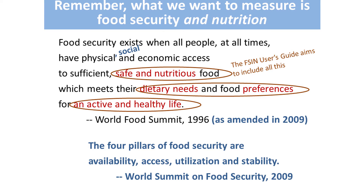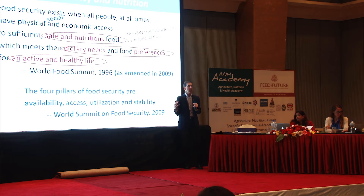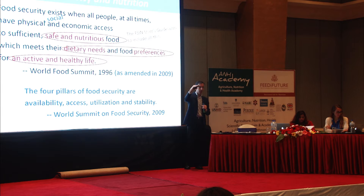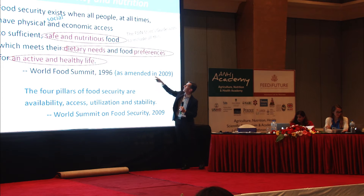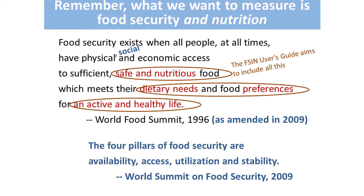So remember, here's the definition we're working from — the thing we're trying to measure, recognizing that it has many dimensions, like a car or airplane or microwave oven doing a lot of different things. So we want a lot of different ways to know: is this airplane about to crash or is it doing well? The FSIN user's guide is the broad thing, and then the index project is a deep dive. We'll do the broad thing first, then the deep dive, then come back to different categories.